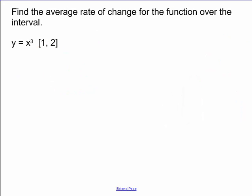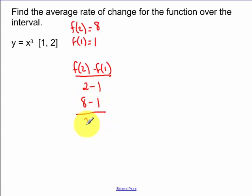So find the average rate of change for the function over the interval. f of 2 is equal to 8, f of 1 is equal to 1. So I do f of 2 minus f of 1 all over 2 minus 1. 8 minus 1 over 2 minus 1, that is going to be equal to 7.